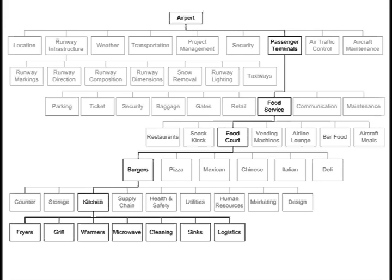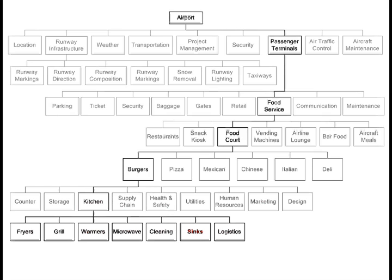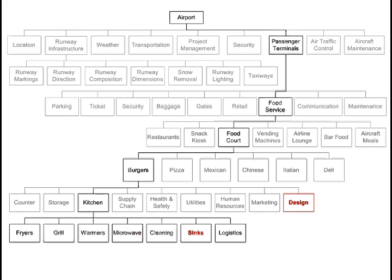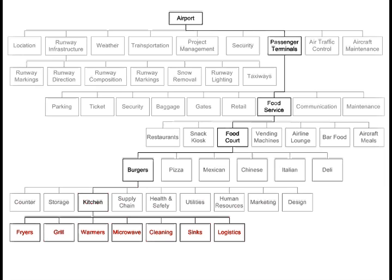The lowest level of WBS decomposition is called a work package. Think of a work package as a deliverable that is decomposed to a level where you can comprehend all of the tasks necessary to create that deliverable. At this level, you should be able to identify, estimate, schedule, monitor, and control all the activities necessary to build the work package. The sinks deliverable is at a work package level — I can sit down and come up with all the activities I must perform to achieve it, especially since the restaurant design is already completed and I know the dimensions and placement of the sinks.